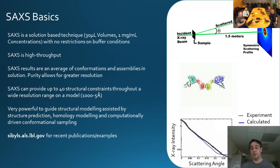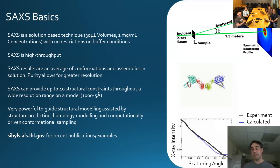Things I want you to know is that SAXS is a solution-based technique, sort of 30 microliter volumes, per mill concentrations. There are really no restrictions on buffer conditions, aside from melting the sample cell or something like that. So not a lot of sample prep. And it's high throughput — you can collect a sample in a second.